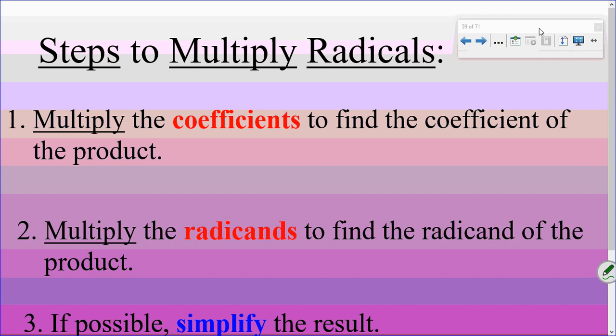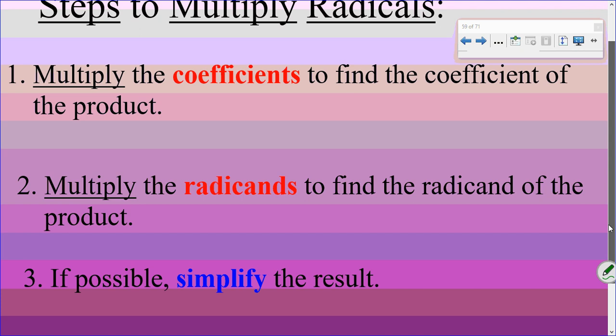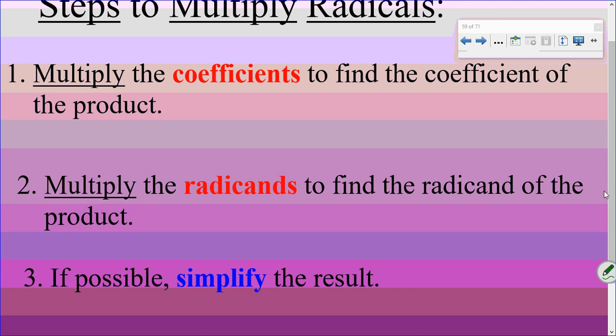So the steps in multiplying radicals are multiply the outside numbers, which are called the coefficients, to find the coefficient of the product. Step 2, multiply the radicands. Radicands are the inside numbers to find the radicand of the product. And step 3, simplify if possible. So those are your three steps. That's all you've got to do.